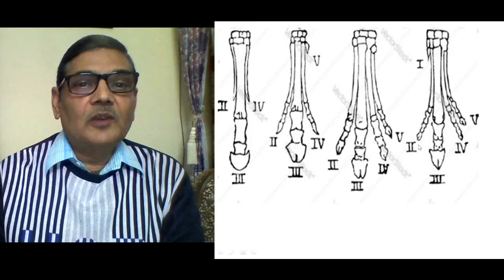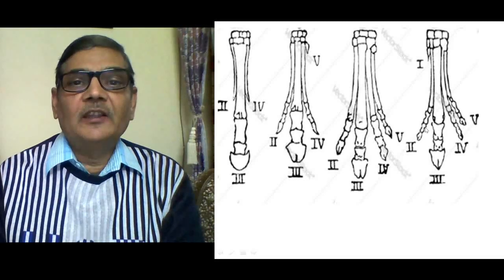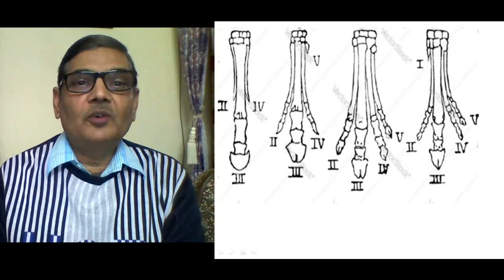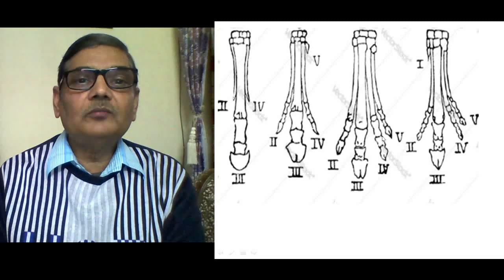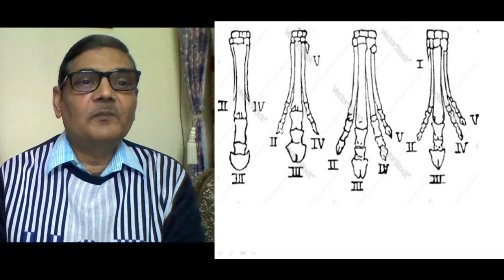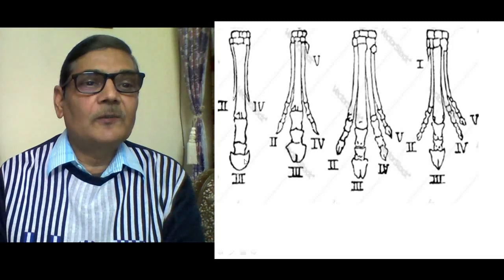Here again, the same pattern is shown. In Eohippus, four toes are seen in the limb. In Mesohippus and Merychippus, only the third was prominent, while the second and fourth got much reduced. In present-day horses, only this third toe remains.